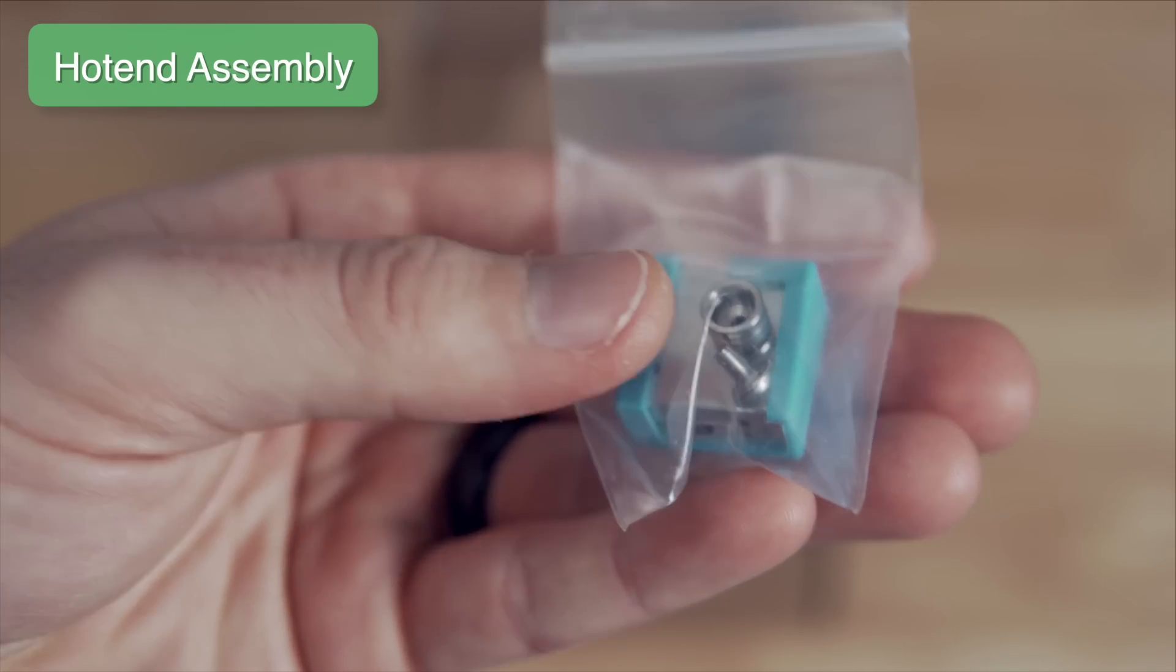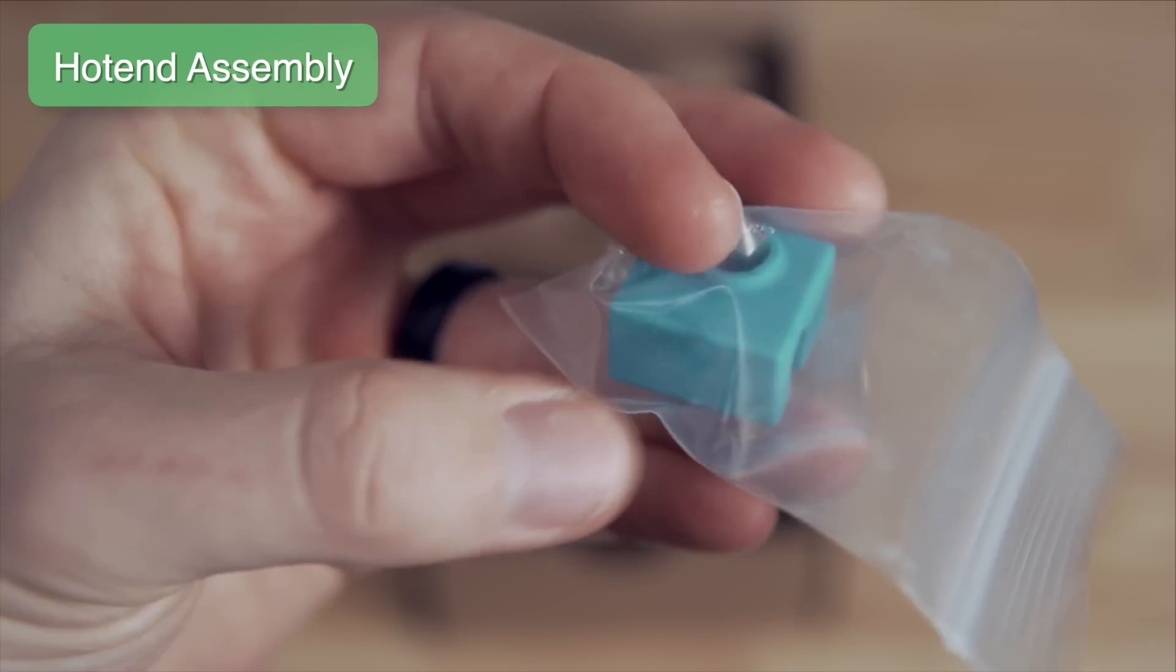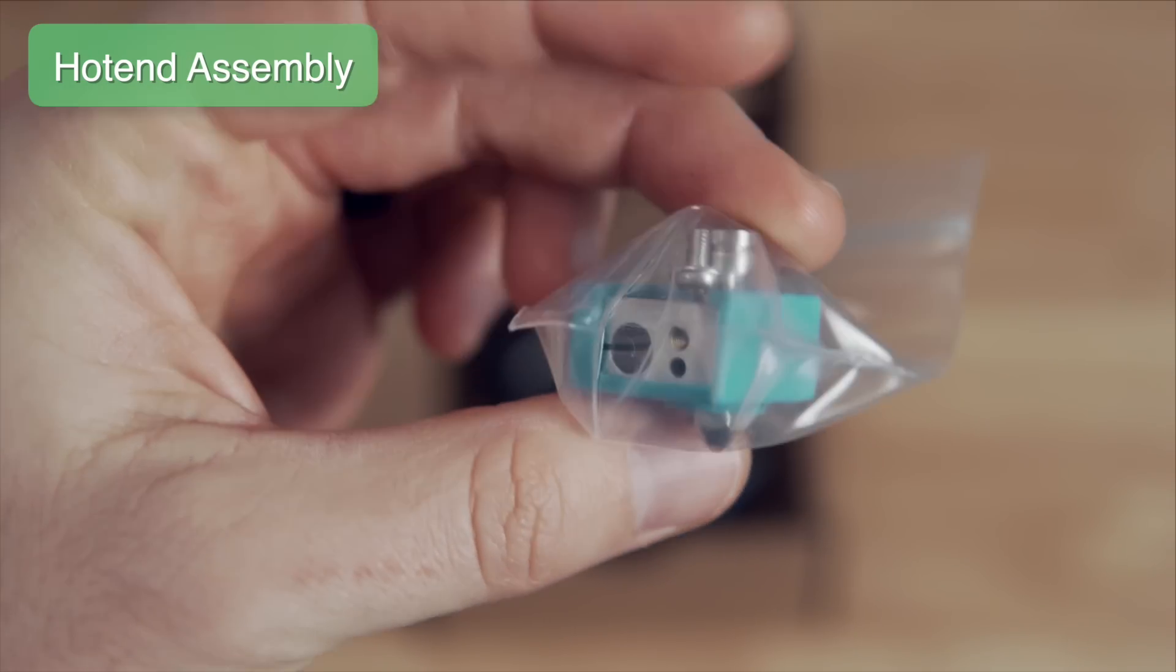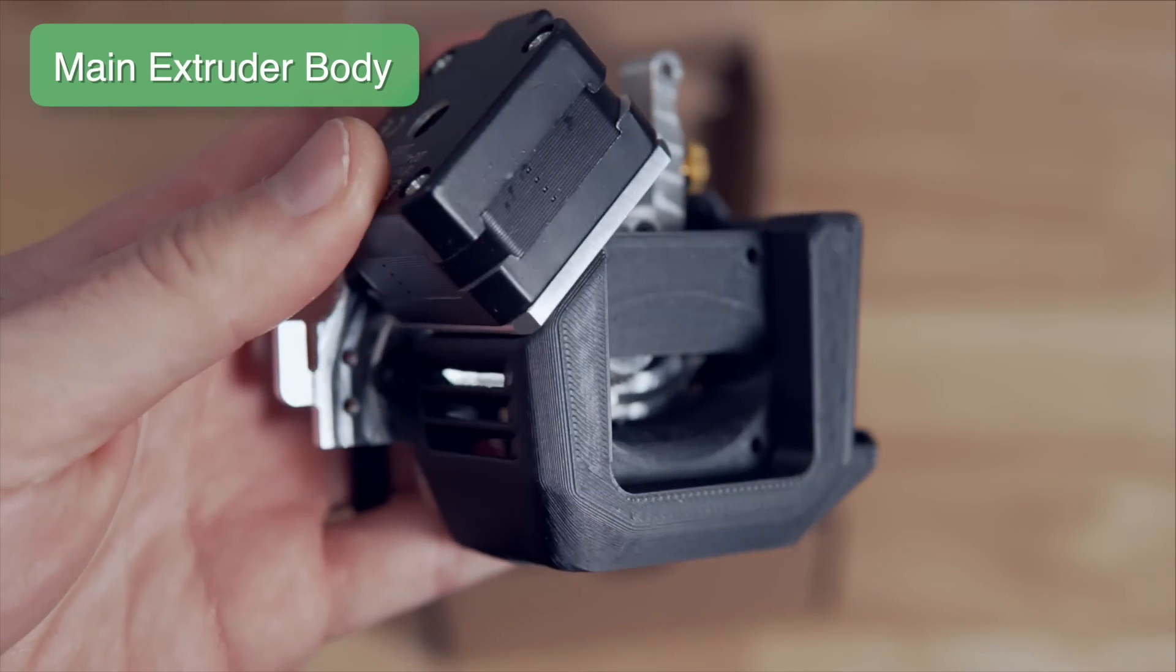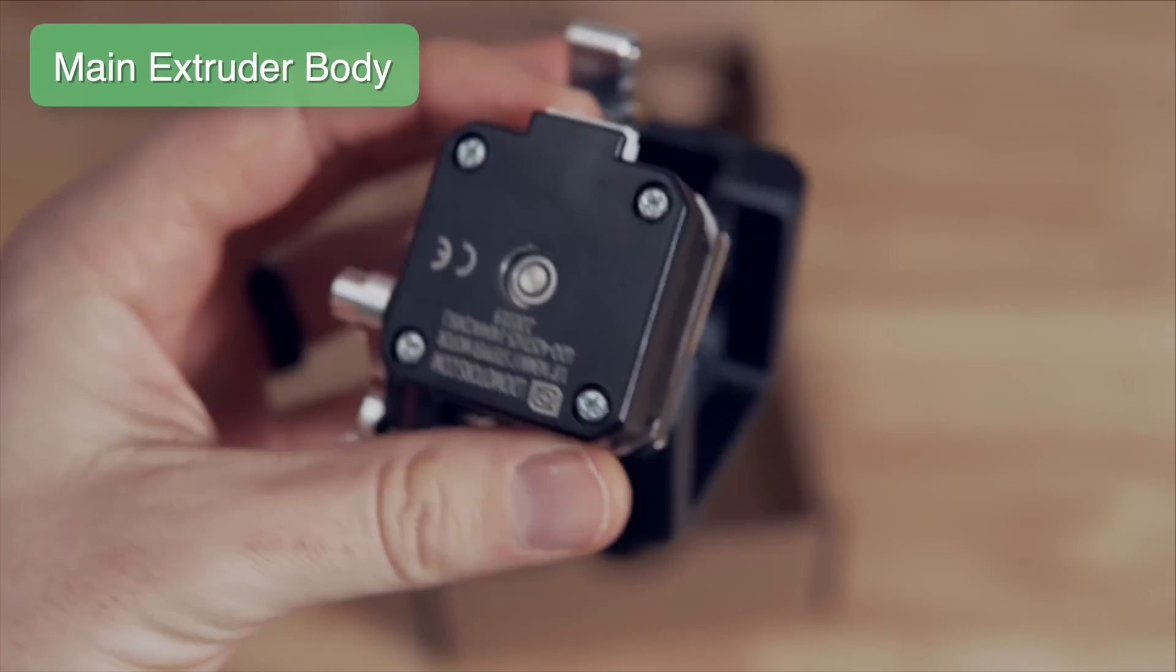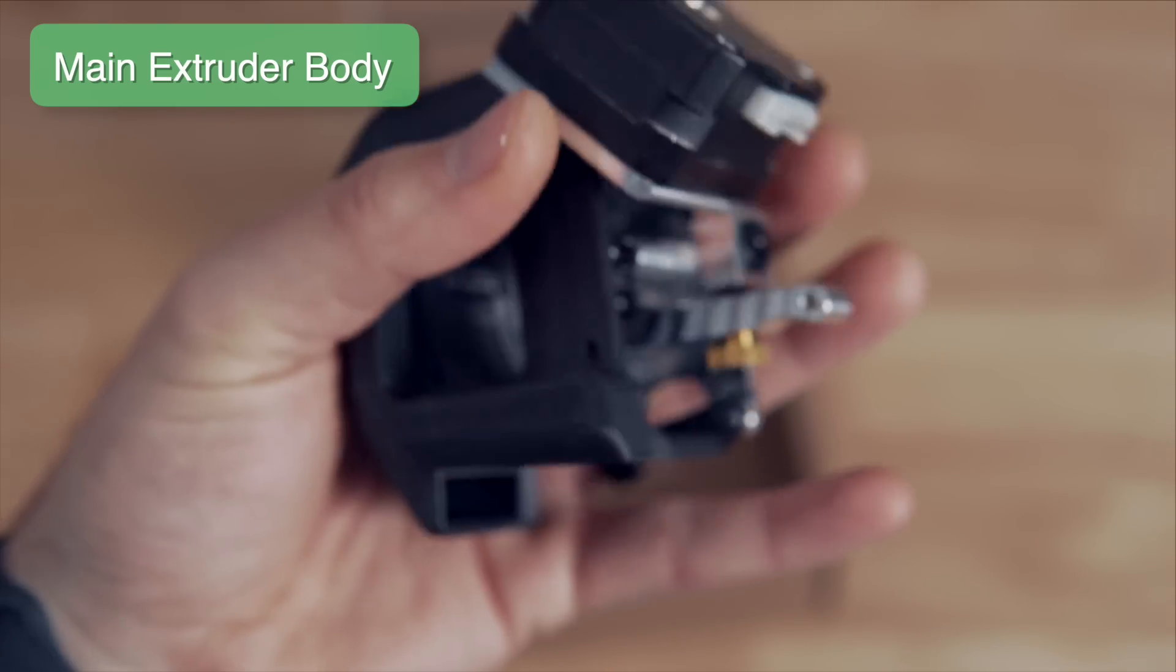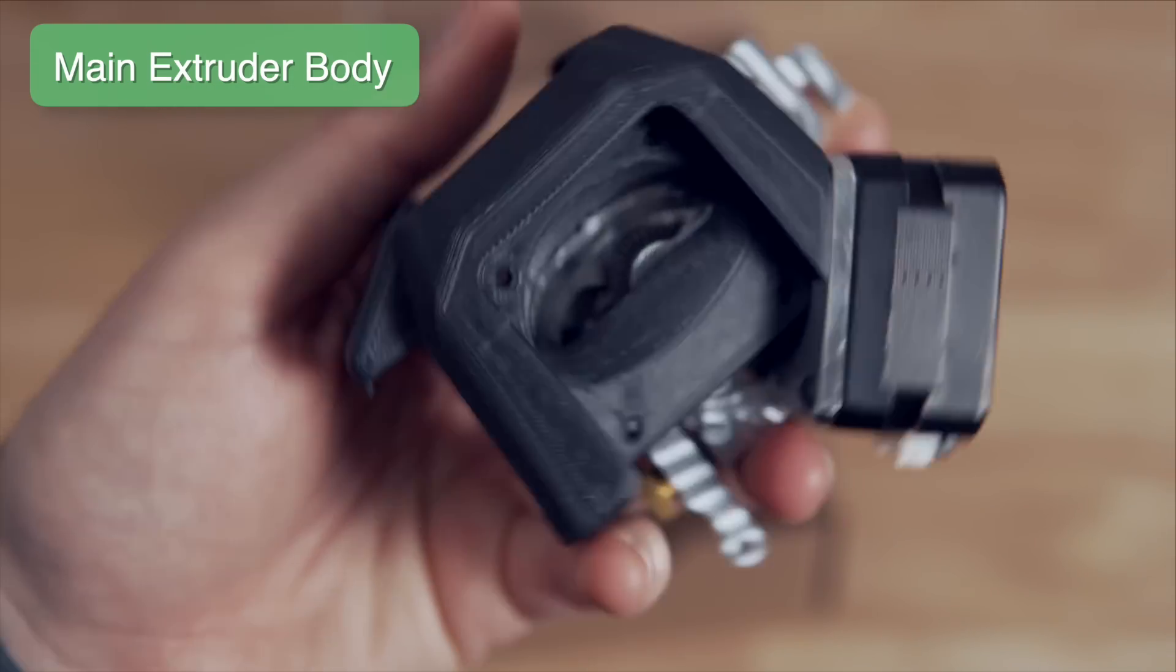Our new all metal hotend. Both the nozzle and the heat brake have been heat tightened to spec at factory, which is a really nice inclusion. And last but not least, the main body of the NG extruder. This already has the custom stepper motor mounted as well as the new fan shroud that we're going to be using.